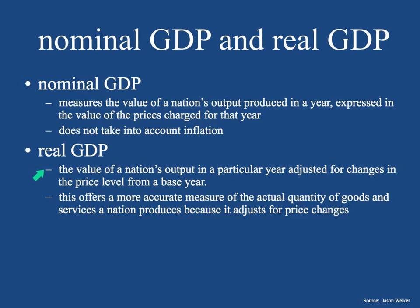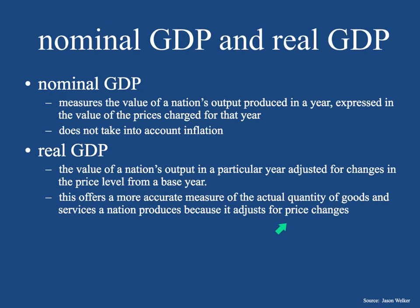Real GDP does account for price changes. Real GDP is the value of a nation's output in a particular year adjusted for changes in the price level from a base year. They'll take a year like 2010 and make that the base year of zero, then do calculations to make sure that anything purchased in 2016 is adjusted to the value of the Chilean peso in 2010. This offers a more accurate measure of the actual quantity of goods and services a nation produces because it adjusts for price changes — it would take the $1,050 spent on the computer and make it only worth $1,000, so you're comparing the same thing. Real GDP is what's really important to us.